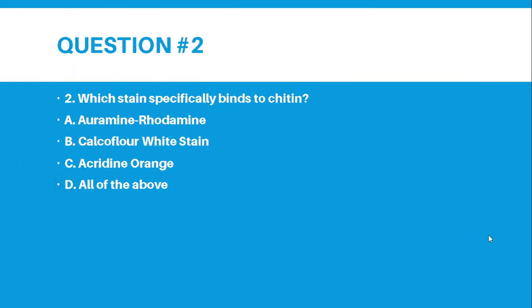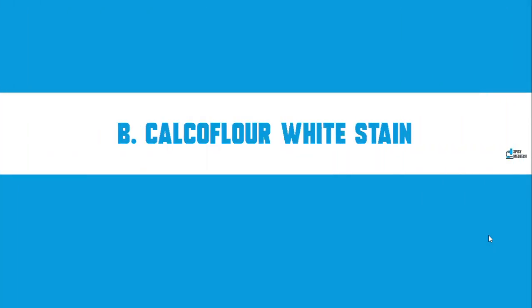Number 2. Which stain specifically binds to chitin? Letter A, Auramine Rhodamine. Letter B, Calcofluor White Stain. Letter C, Acridine Orange. Letter D, All of the above. And the correct answer for number 2 is letter B, Calcofluor White Stain.